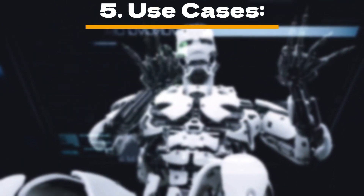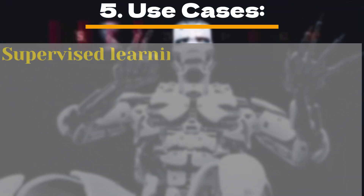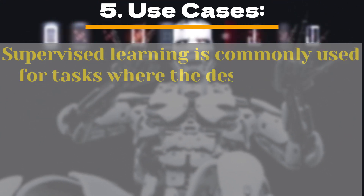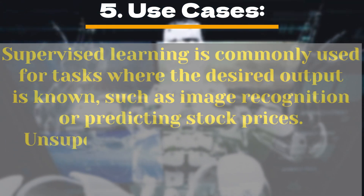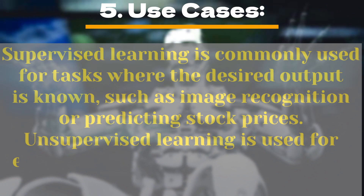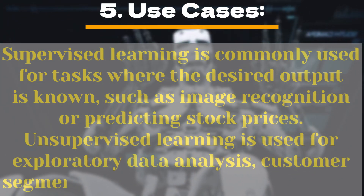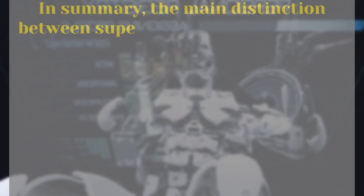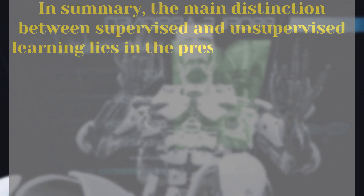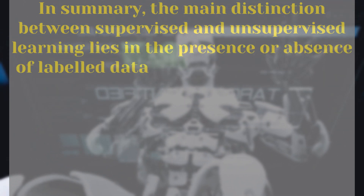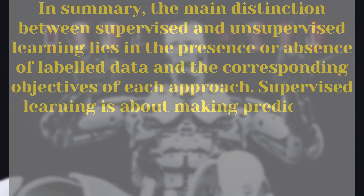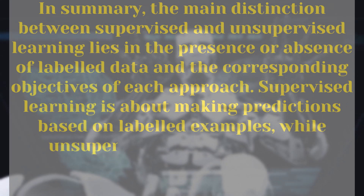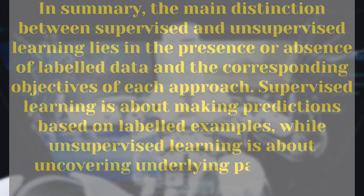5. Use cases: supervised learning is commonly used for tasks where the desired output is known, such as image recognition or predicting stock prices. Unsupervised learning is used for exploratory data analysis, customer segmentation, and anomaly detection. In summary, the main distinction between supervised and unsupervised learning lies in the presence or absence of labeled data. Supervised learning is about making predictions based on labeled examples, while unsupervised learning is about uncovering underlying patterns in unlabeled data.